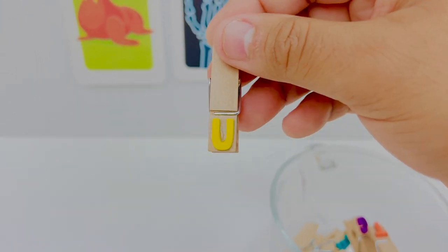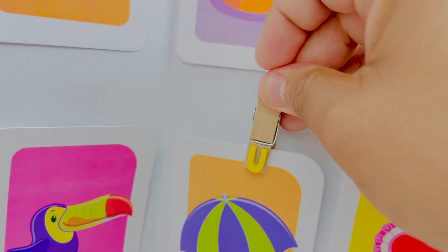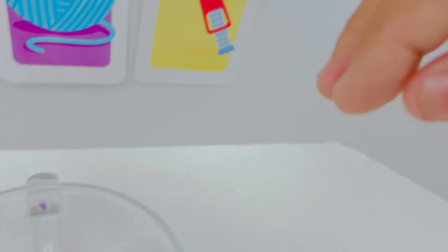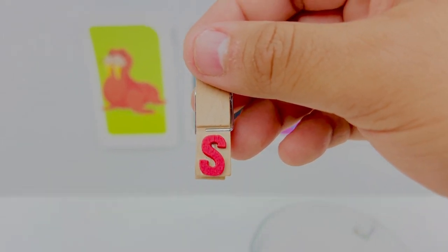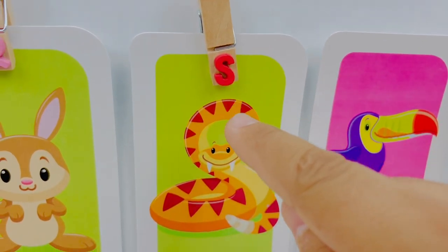This is letter U. Letter U is for umbrella. U umbrella. This is letter S. Letter S is for snake. S snake.